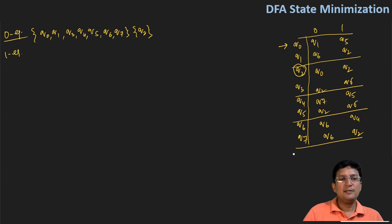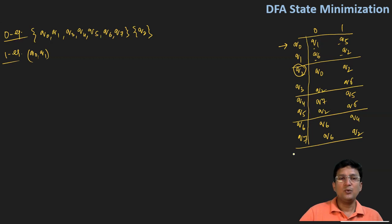For finding out the one equivalence, I will take the pair q0 and q1 first. On zero, q0 goes to q1 and q1 goes to q6 — both belong to the same set. But on one, q0 goes to q5 and q1 goes to q2; q5 and q2 are in different sets. So q0 and q1 are not one equivalent.